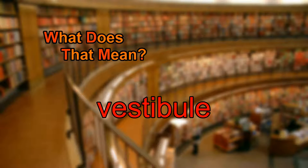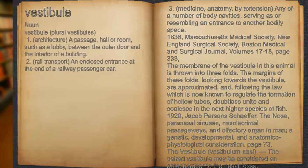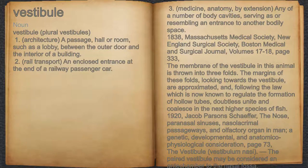What does vestibule mean? Vestibule. Noun. 1. Architecture: a passage, hall, or room, such as a lobby, between the outer door and the interior of a building.